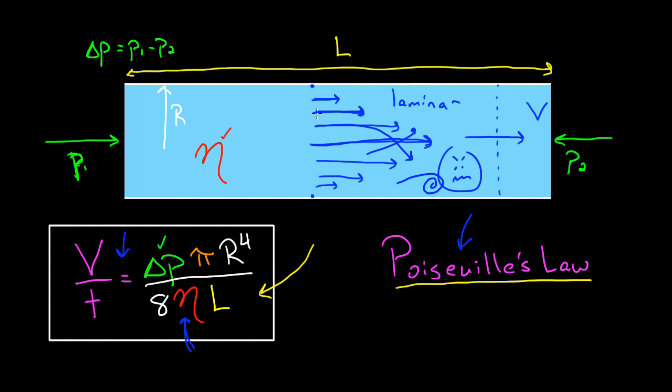We saw that if you had nice laminar streamlined flow, Poiseuille's law told you how much volume per time would flow through a pipe. But how do you know when you're going to have nice laminar flow?